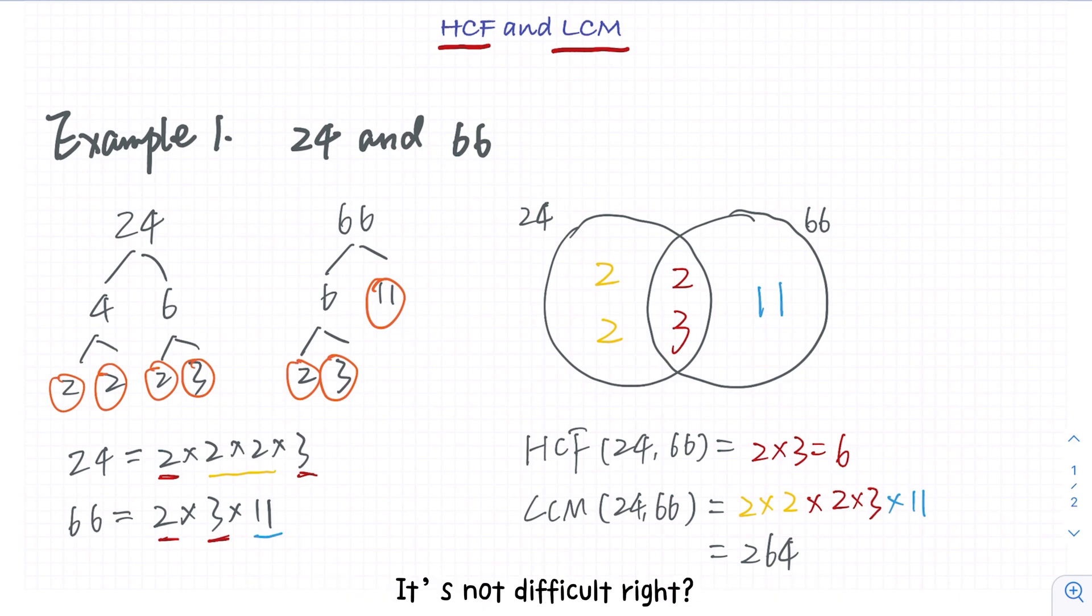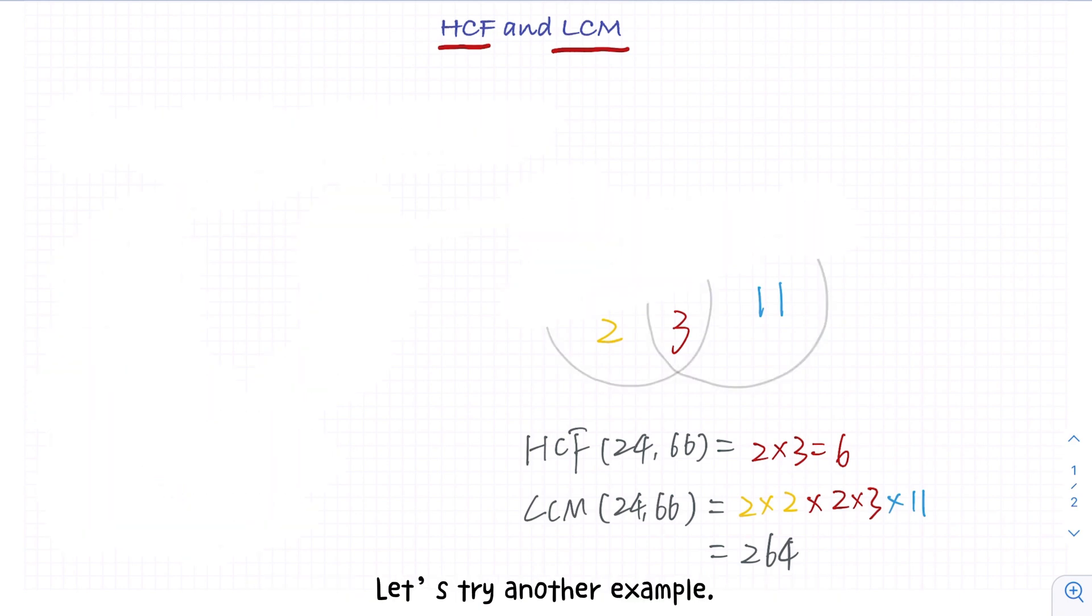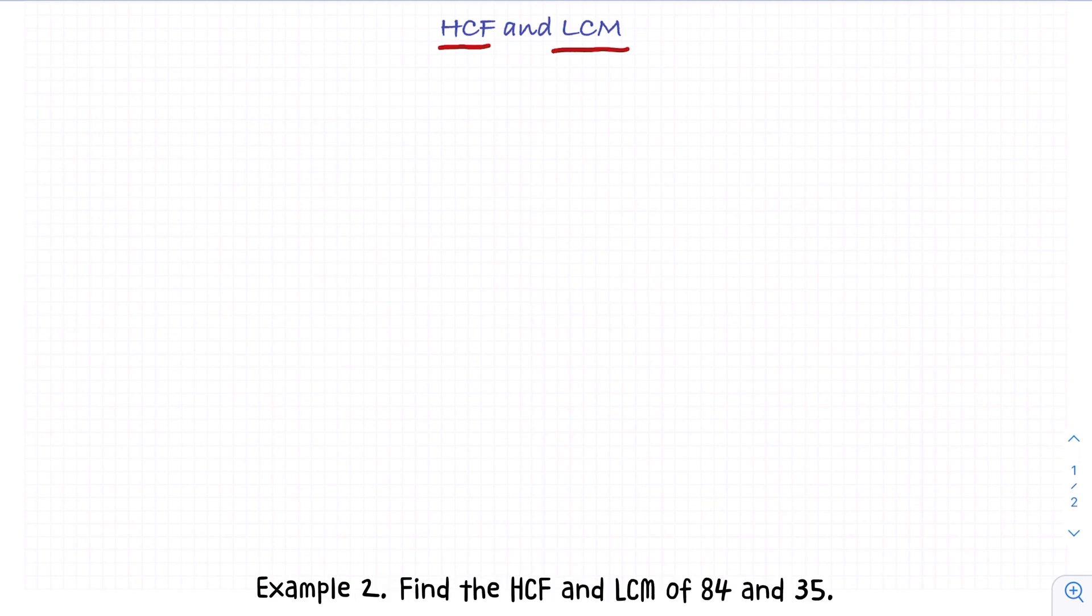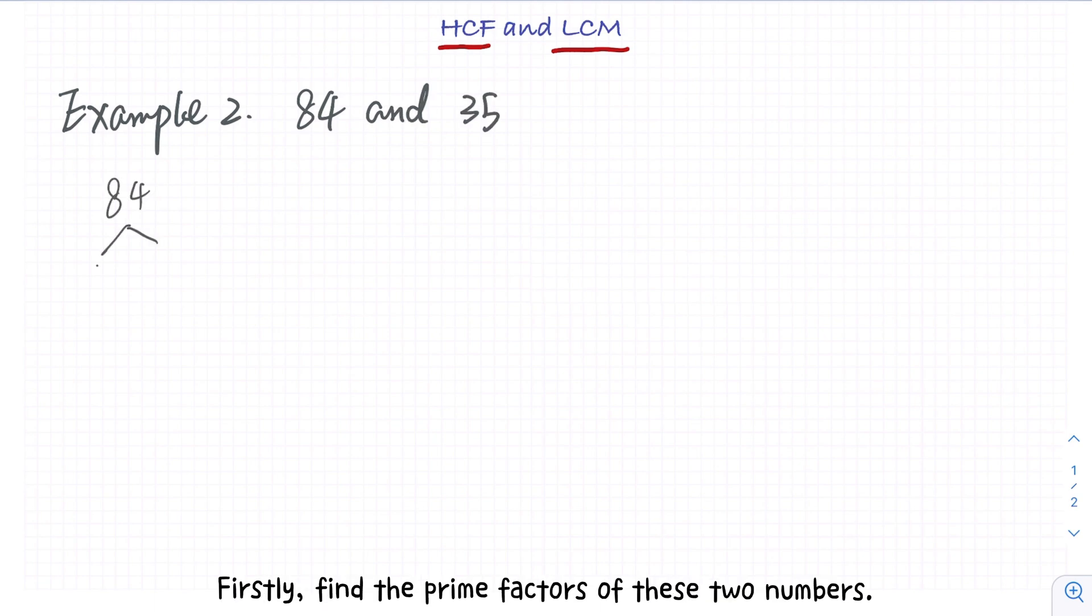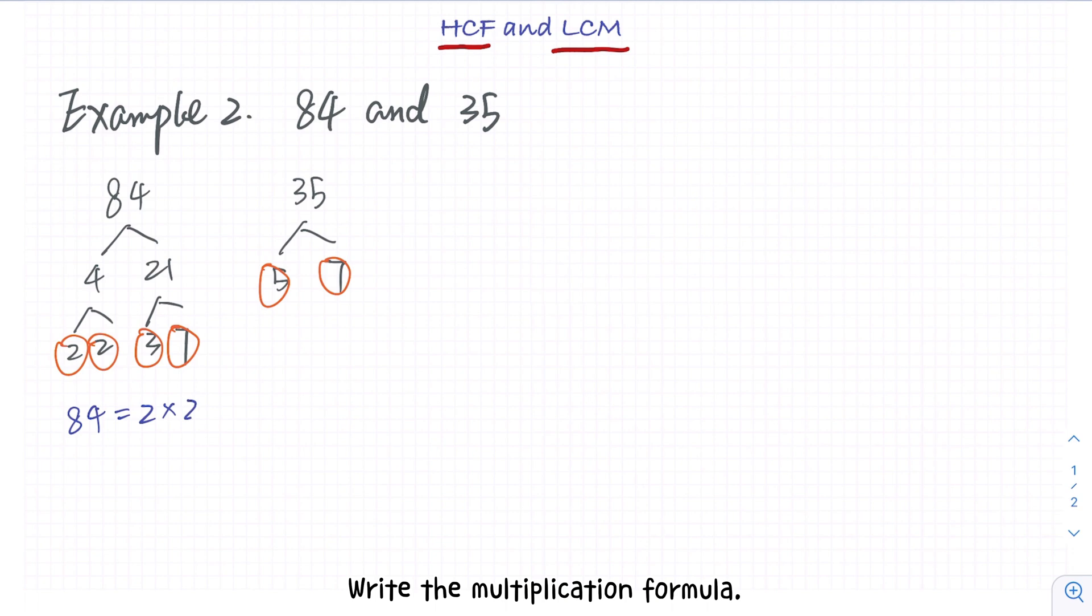It's not difficult, right? Let's try another example. Example 2: find the HCF and LCM of 84 and 35. Firstly, find the prime factors of these two numbers. Write the multiplication formula.